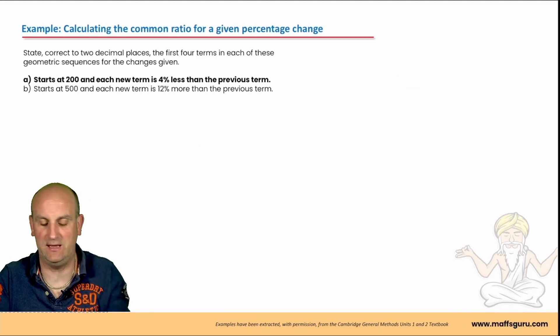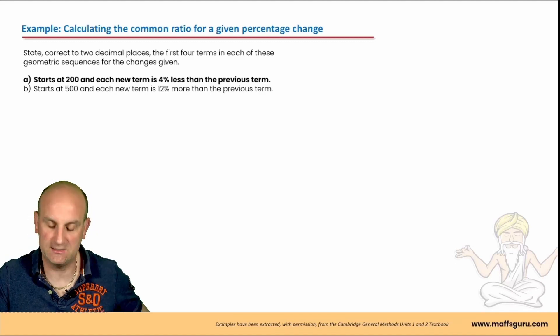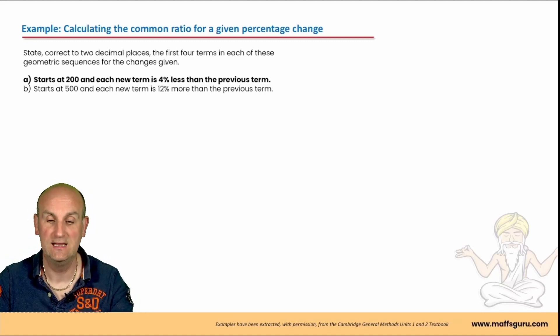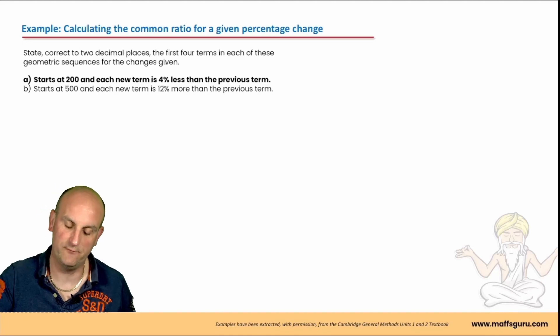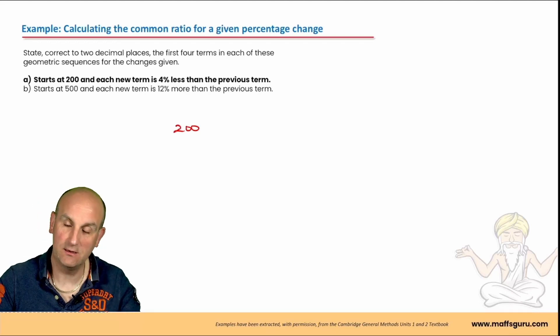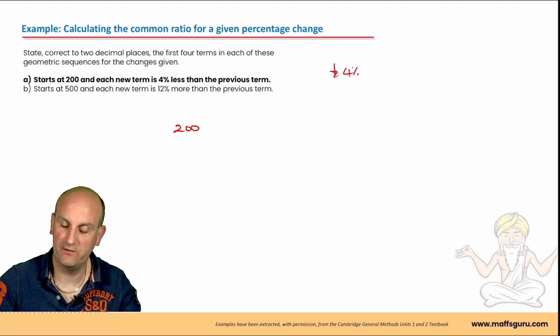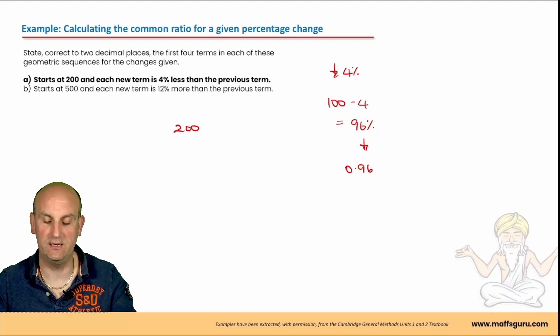Right, state correct to two decimal places. And the number of people in general maths who sadly can't round to two decimal places is quite scary. The first four terms in each of the geometric sequences for the changes given. So the first one, I'm going to start at 200, and I'm going to be 4% less than. Okay, so I'm going down by 4%. So I've got 100, I'm minusing 4, gives me 96%. Divide that by 100, gives me a multiplier of 0.96.